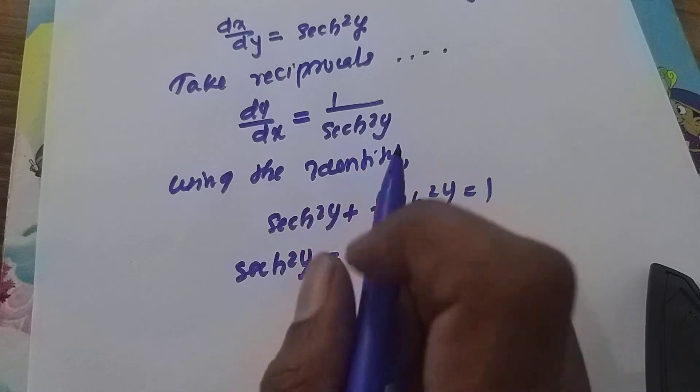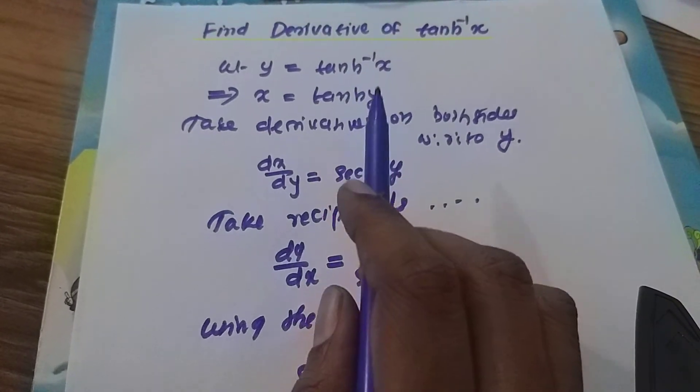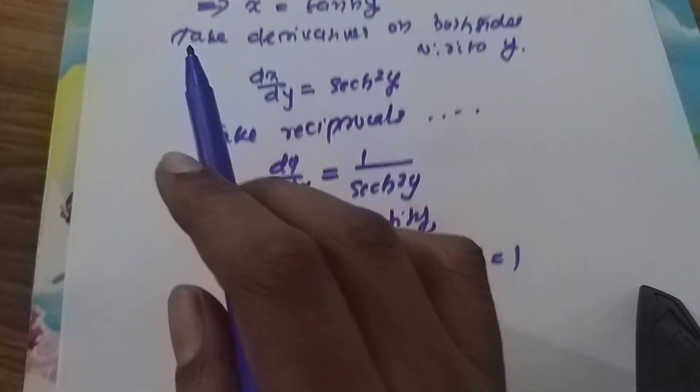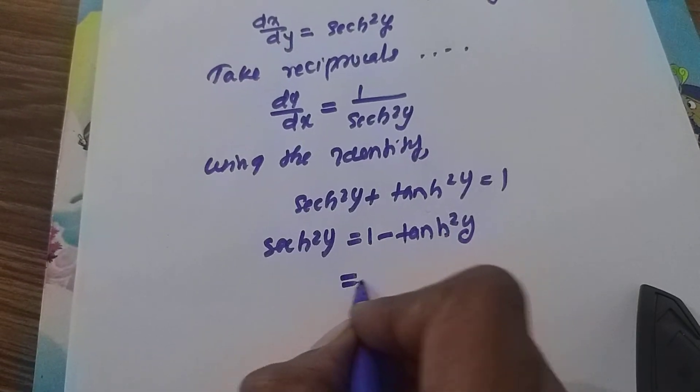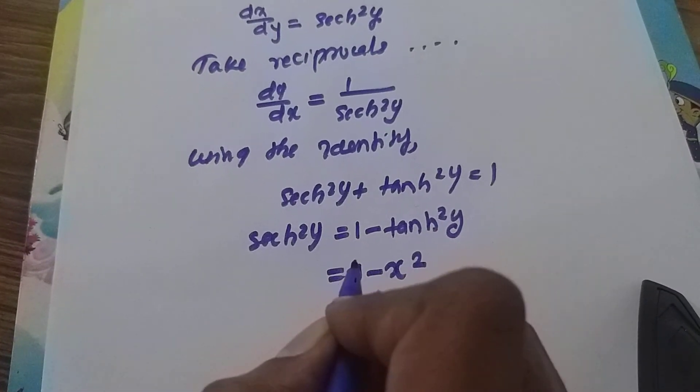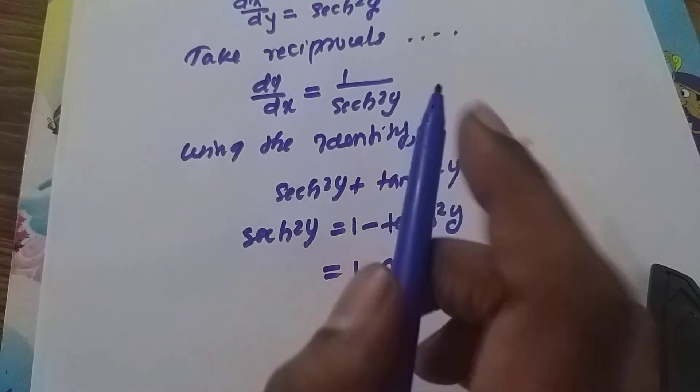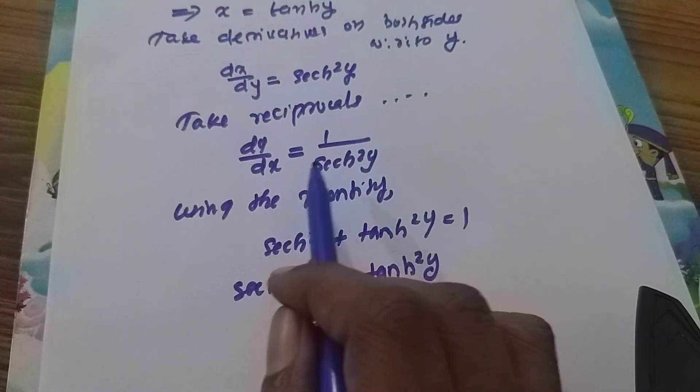Since tanh y equals x, this becomes 1 minus x squared.